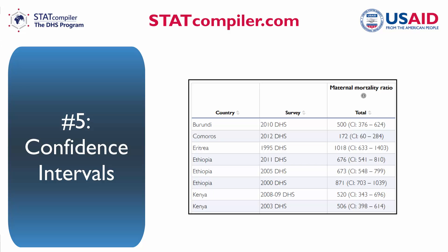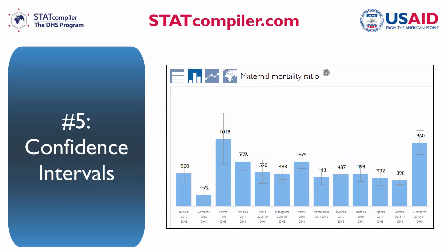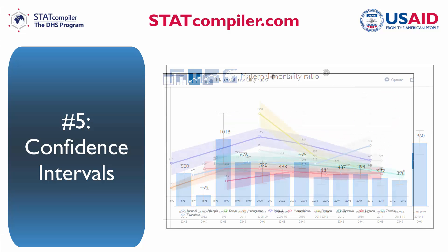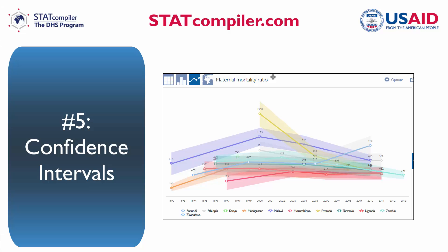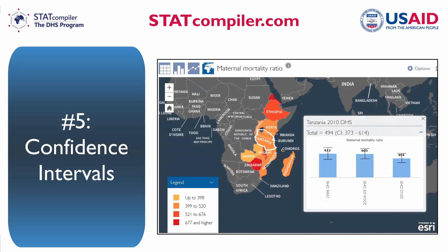For example, if you select maternal mortality ratio, you will see the confidence intervals included in the data table, the bar chart, the line graph, and the map views.